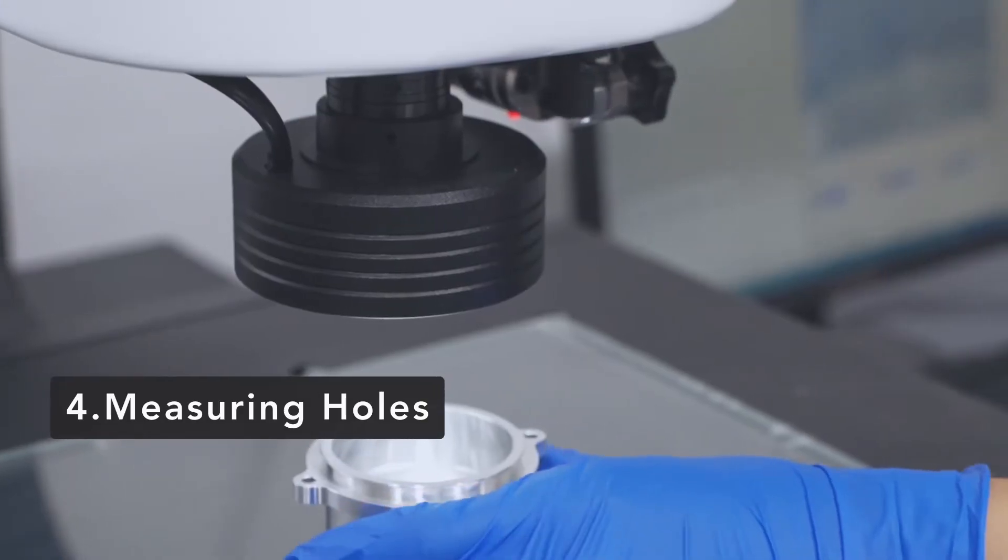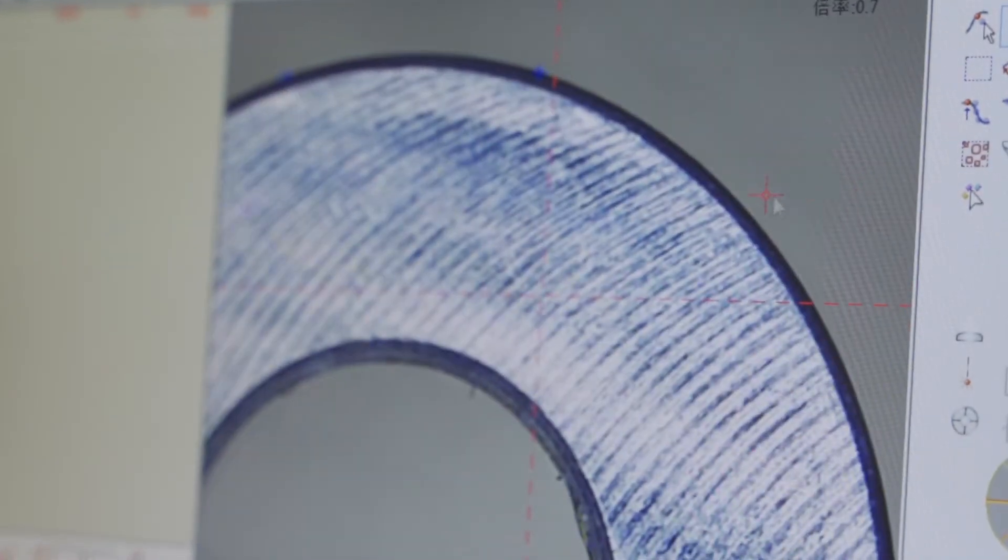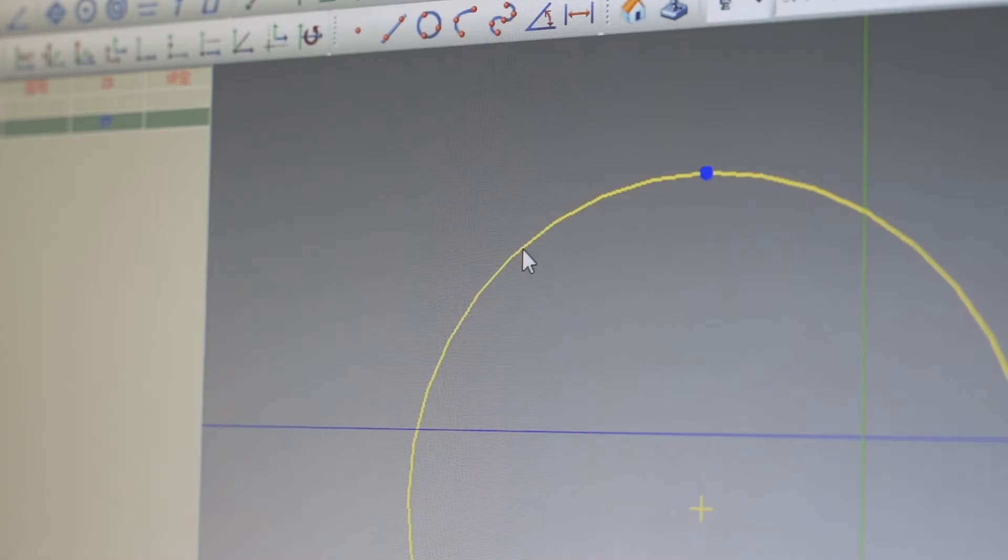Number 4, we use 2.5 dimension measuring instrument to check the holes radius that is R5.